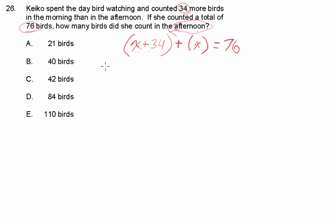Now we just simply solve for x. We'll go ahead and combine like terms. As you know, in algebra, you can only combine like terms. So, we have 2x plus 34 is equal to 76.